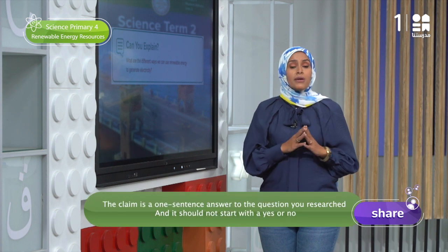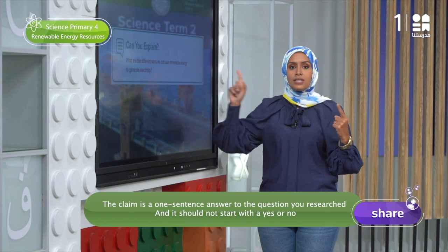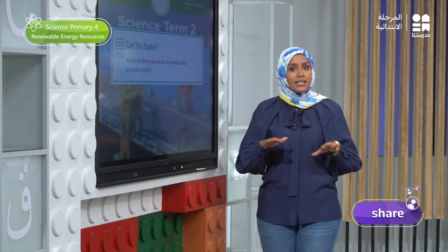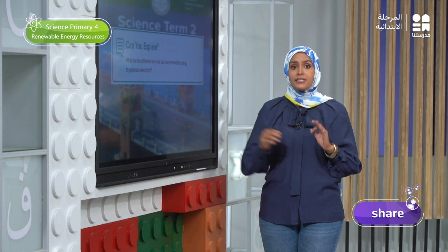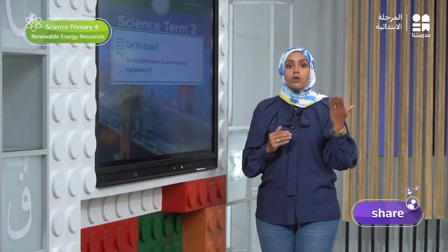The three elements are: Claim, Evidence, and Reasoning. We will record the Claim, which is one sentence as an answer to the question. Then we record the Evidence that supports our claim. Finally, we write the Reasoning that confirms and supports the claim through examples and explanations that confirm the evidence is right. Let's go back to our book, page 76, and record the Claim, Evidence, and Reasoning.